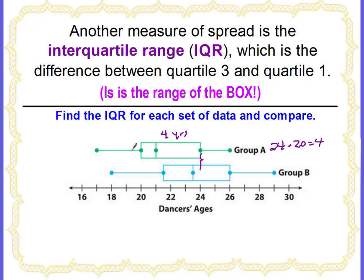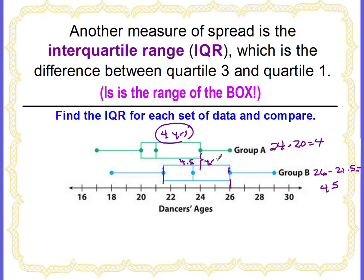The IQR, or the spread of the box, is four years for group A. This means the middle 50% of the ages only has a variability of four years. For group B, the highest value of our box is 26, subtract the lowest, which is about 21.5, and we get 4.5. So the IQR, the spread of the middle 50%, is 4.5 years — there's a little more variability in group B than group A.